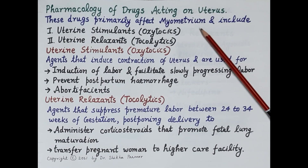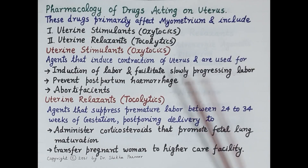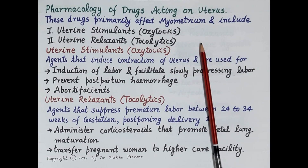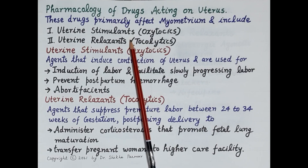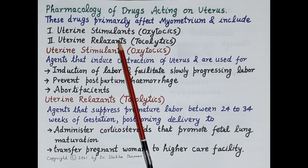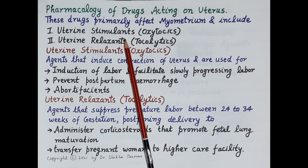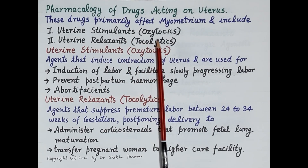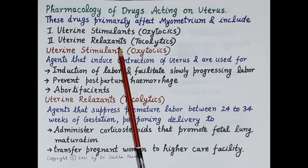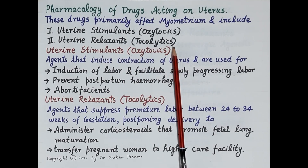The drugs that act on the uterus include two types. The first type are termed uterine stimulants or oxytocics, and the second type are the uterine relaxants or tocolytics.